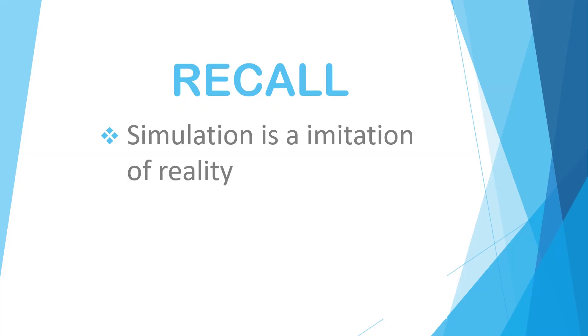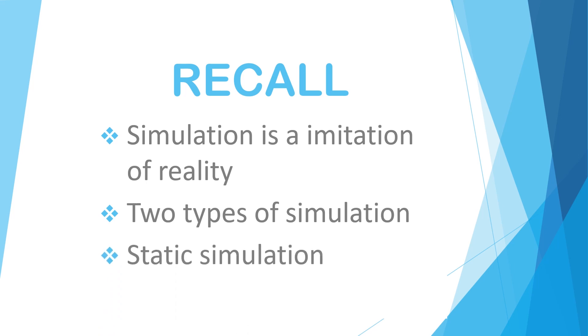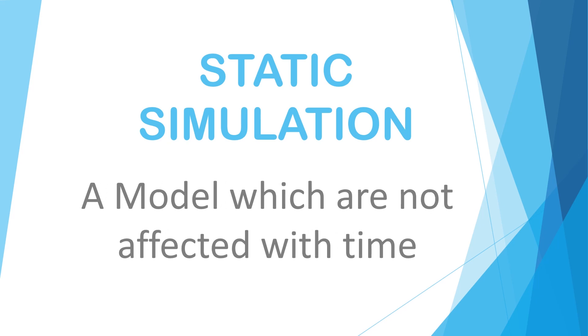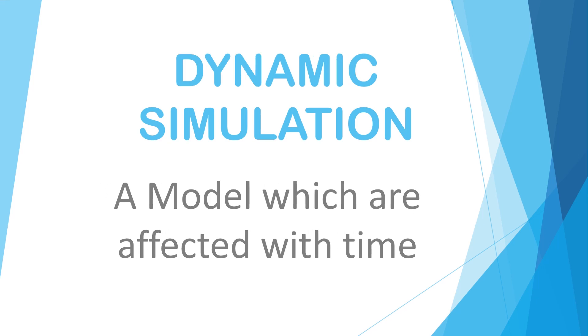Okay friends, now I recall what is simulation and types of simulation. Simulation is an imitation of reality. There are two types. One is static simulation and another one is dynamic simulation. Static simulation is a model which is not affected with time whereas dynamic simulation is a model which is affected with time.